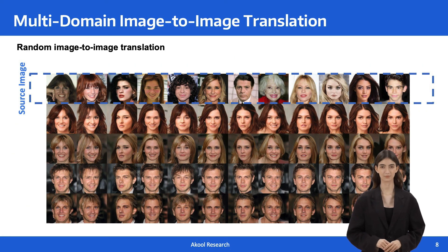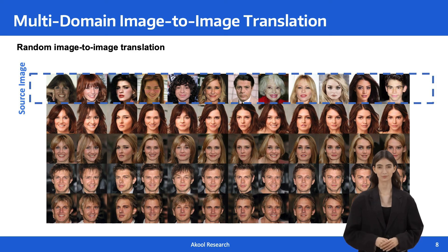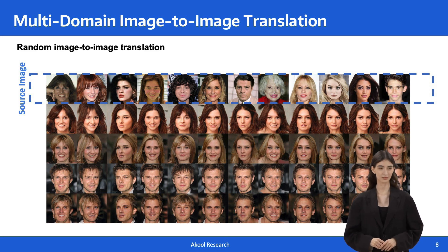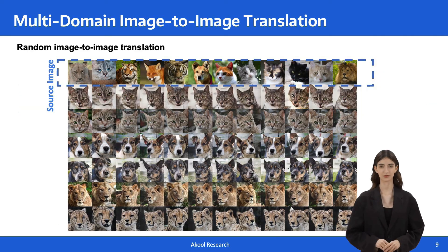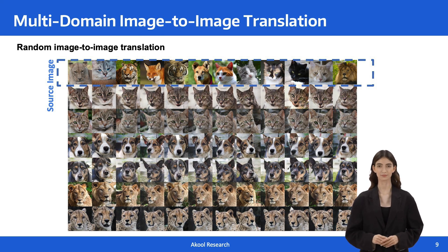We then use style codes that are randomly sampled from the style generator to generate diverse translated images. Examples of generation results on the CelebA-HQ dataset can be seen in this figure. For each source image shown in the first row, we generate multiple outputs using random Gaussian noise. The qualitative results verify the diversity of the translated results from a source input image, as well as the expression-preserving capability of the model. Here is another set of examples of diverse image-to-image translation performed on the animal dataset. For each source image, we generate multiple outputs using random style codes, and the translated images show both diversity and consistency with the source images in terms of geometry.